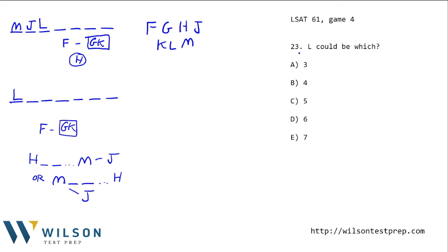Question 23 asks which place L could be in — three, four, five, six, or seven. We already answered this: L can only be in the first or third place, and nowhere else. If this game seemed difficult, that's because it is. Keep practicing, always focus on accuracy. As you understand games and inferences better, your accuracy and speed will both improve.